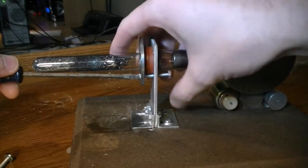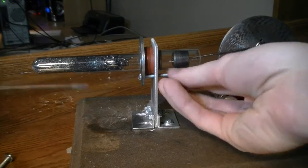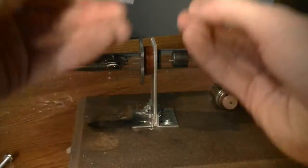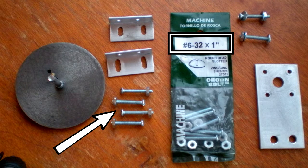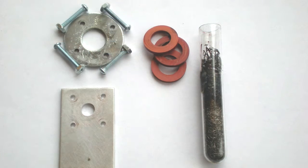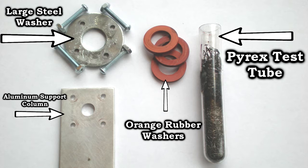Here I am unscrewing the last of four bolts which secure the Pyrex test tube to the aluminum support column. These are one inch long number 6-32 bolts. Their main job is to squeeze three orange rubber washers tightly up against the aluminum support column by applying pressure to the large steel washer.